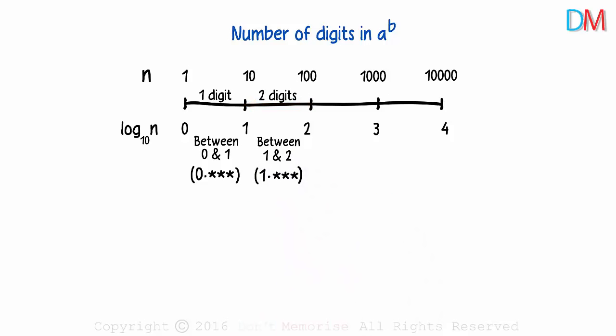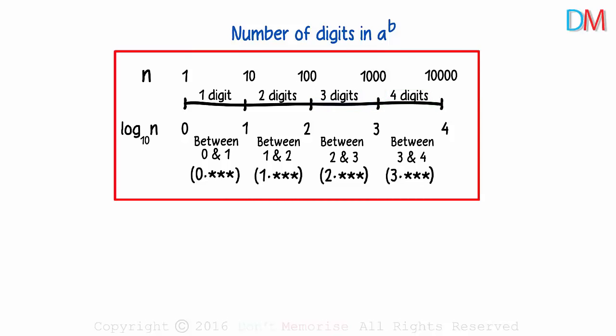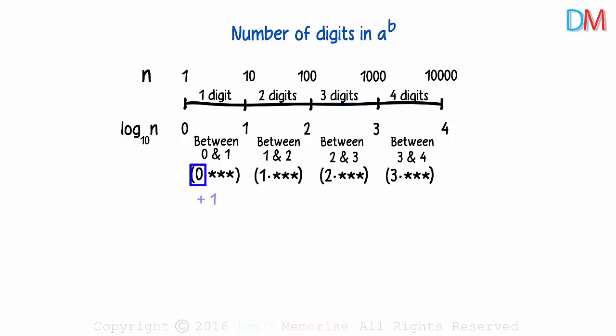We will have 3 digits and 4 digits in these two parts respectively. And their logarithms will be between 2 and 3, and between 3 and 4 respectively. 0 plus 1 is 1. 1 plus 1 is 2. 2 plus 1 is 3. And 3 plus 1 is 4.